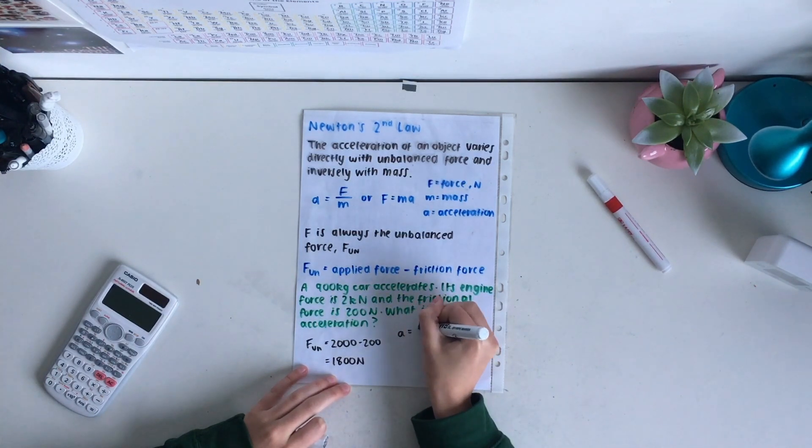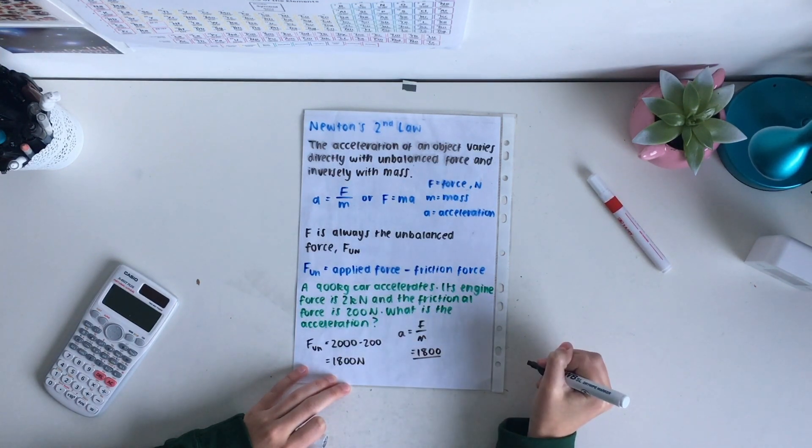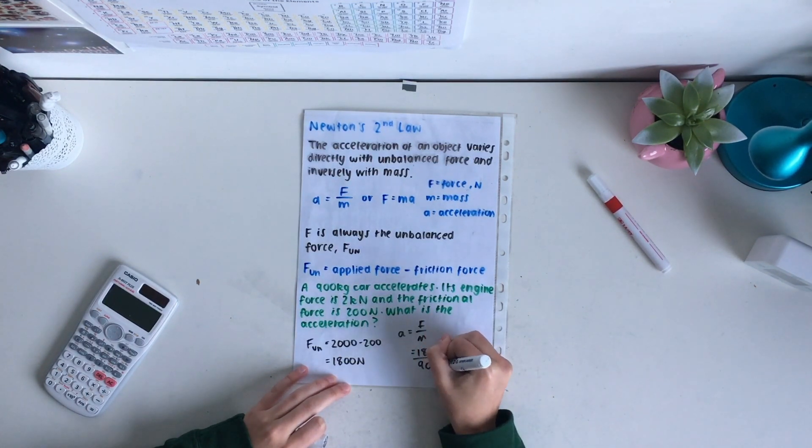A equals F over M, and we know that our unbalanced force is 1800 newtons. Our mass is 900 kilograms, which simplifies to give us an acceleration of 2 meters per second.